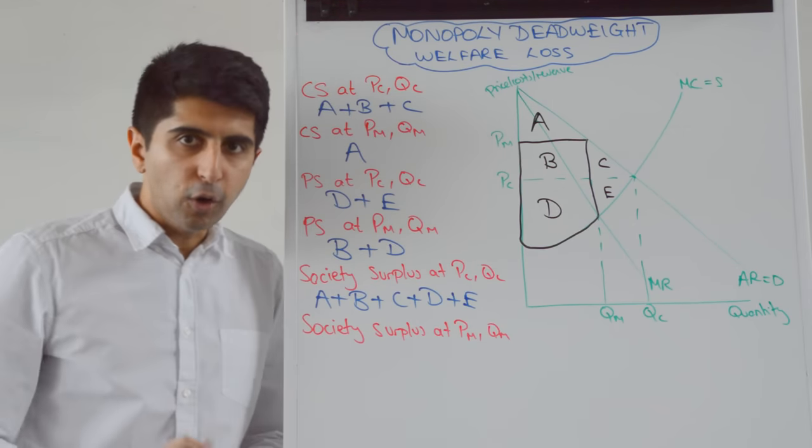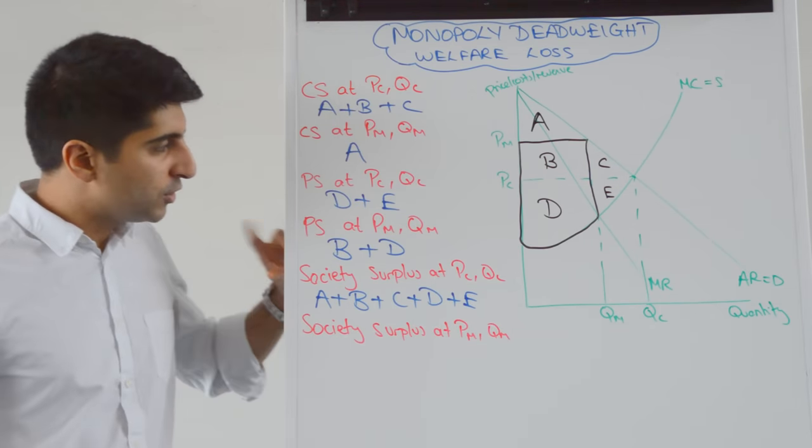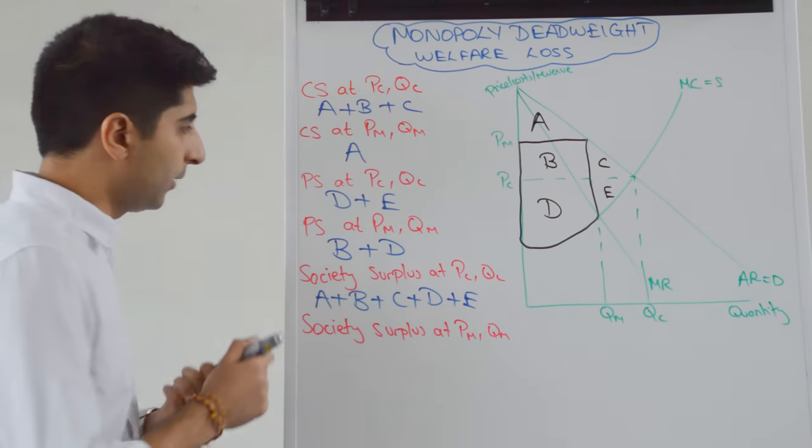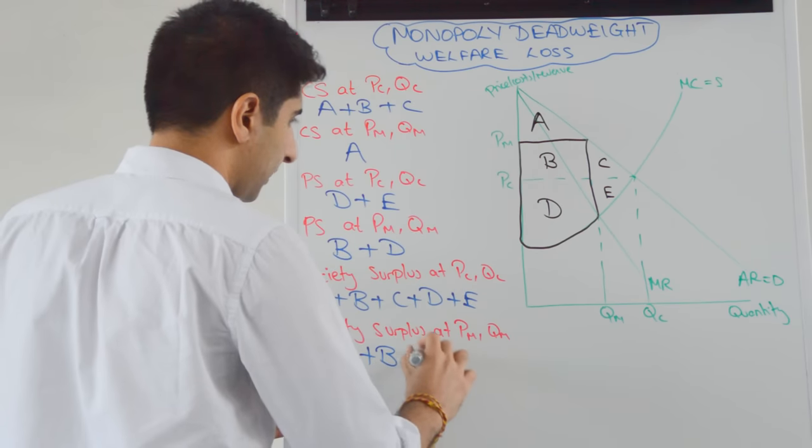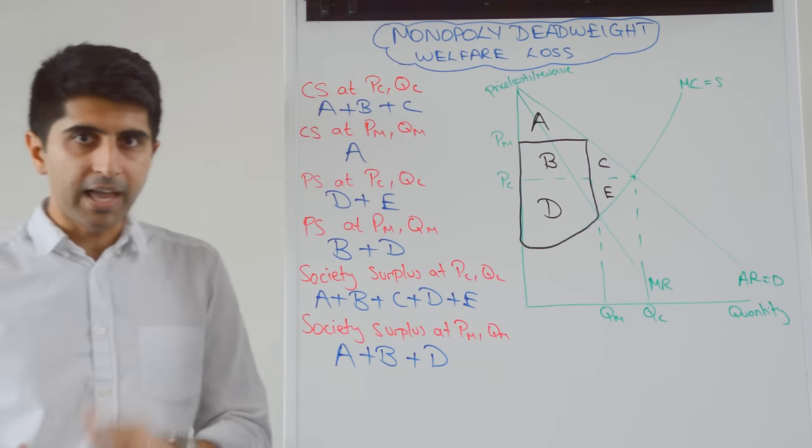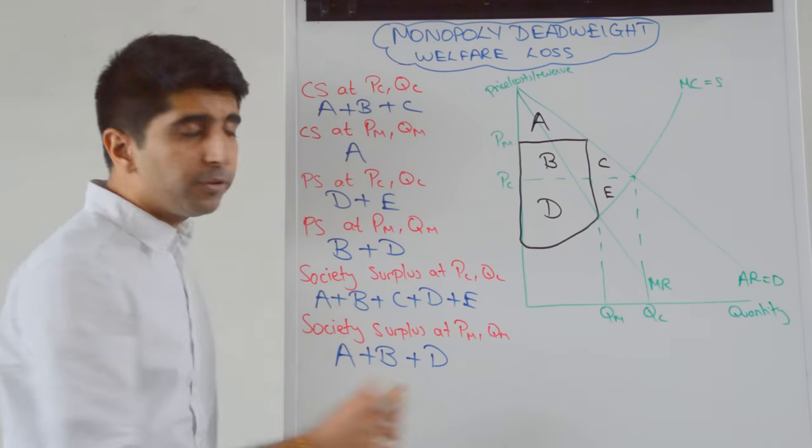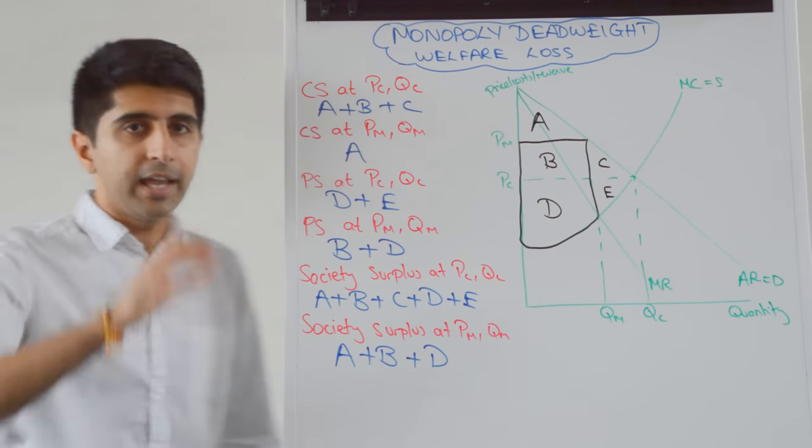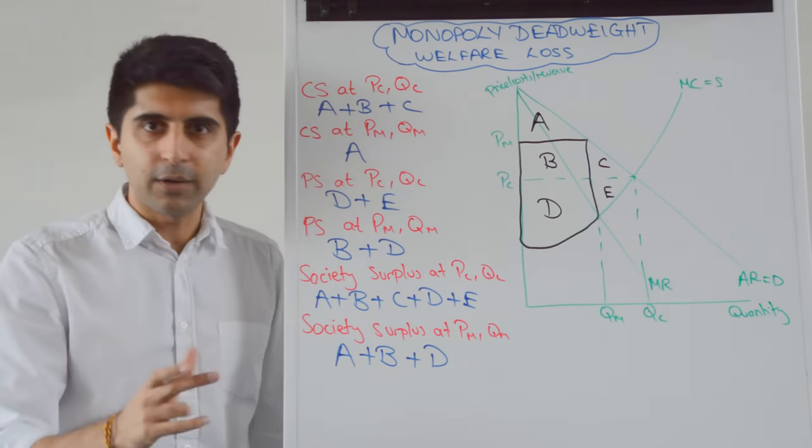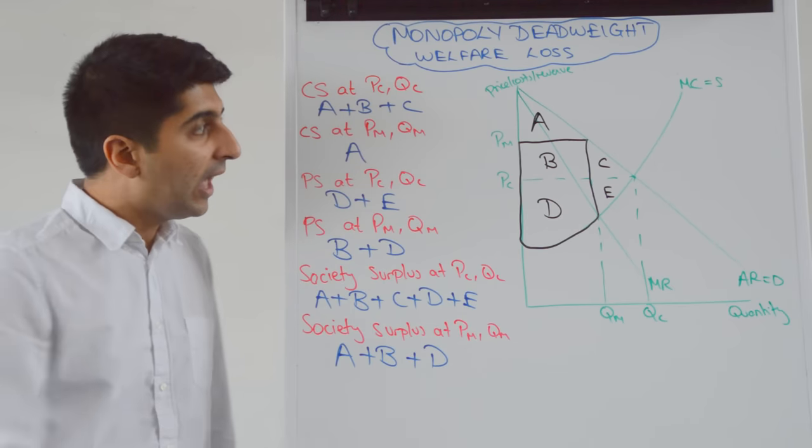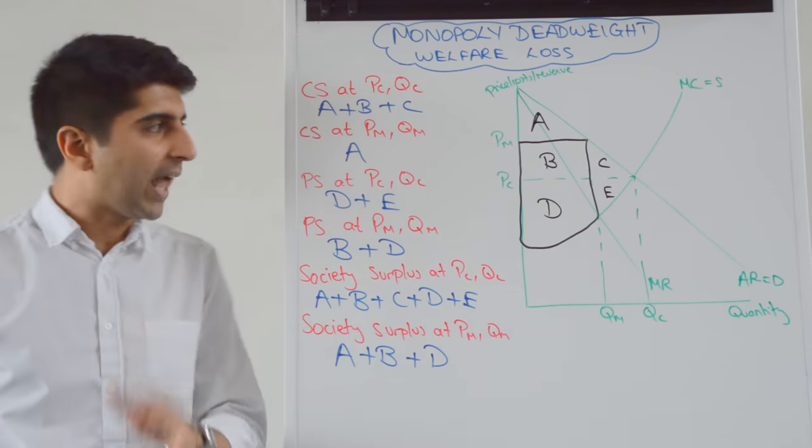What about at monopoly outcomes now? Well let's add up our consumer surplus and our producer surplus at monopoly outcomes and we get A plus B plus D. Even though B was being lost in consumer surplus, it's come back in terms of producer surplus. So B is not a deadweight loss at all, it's been recovered.